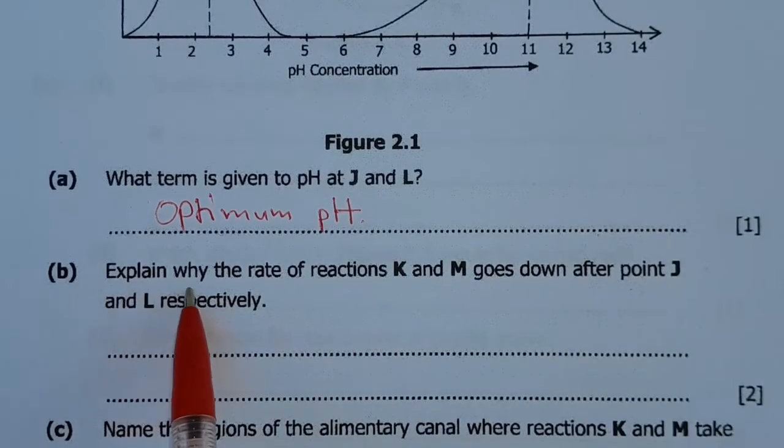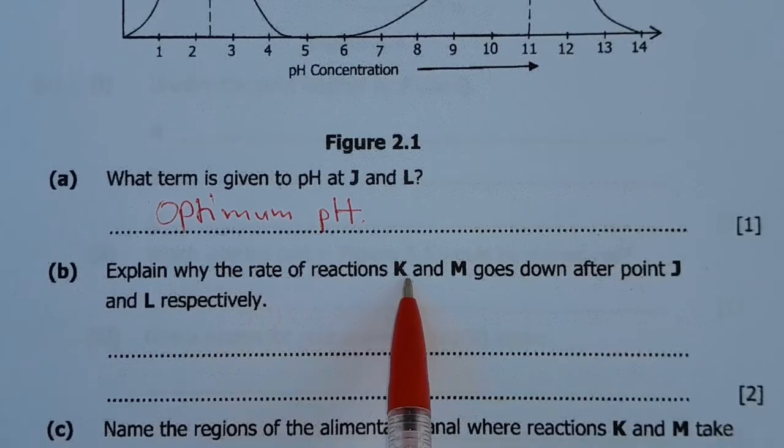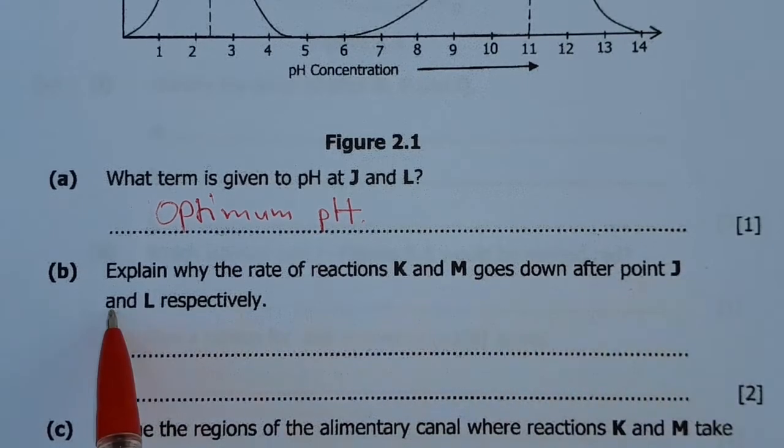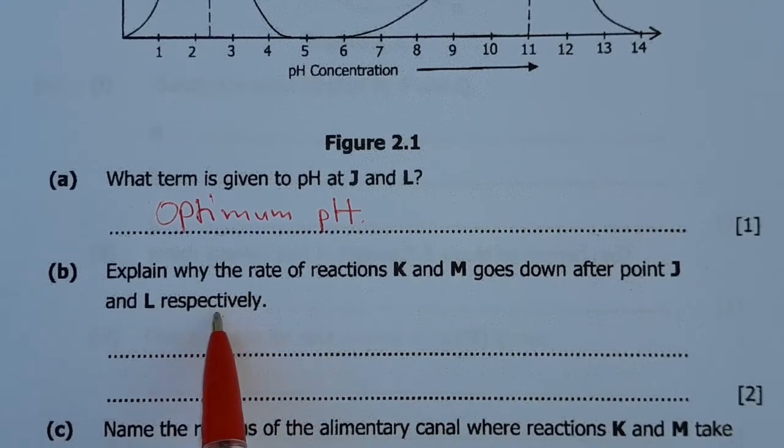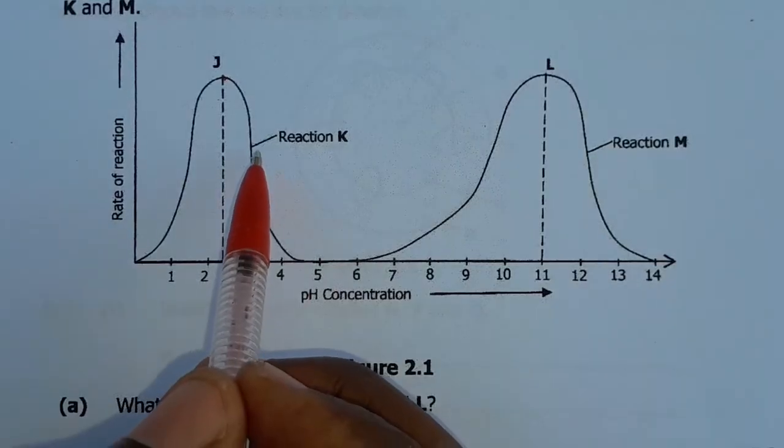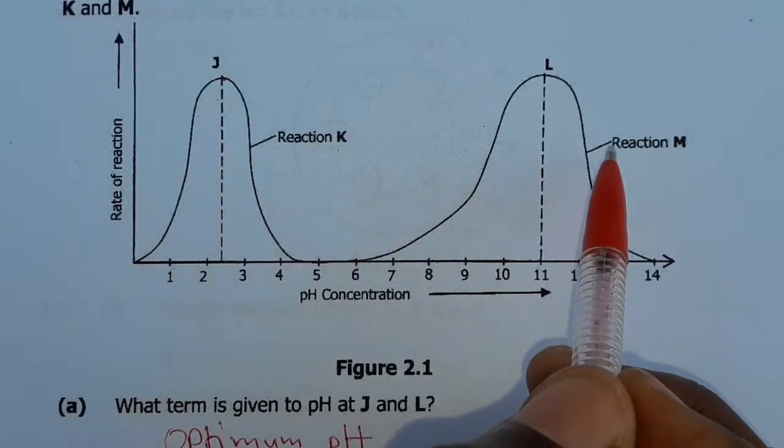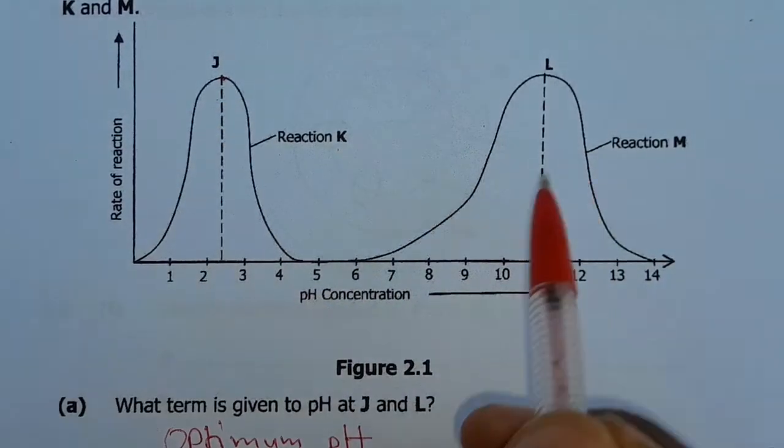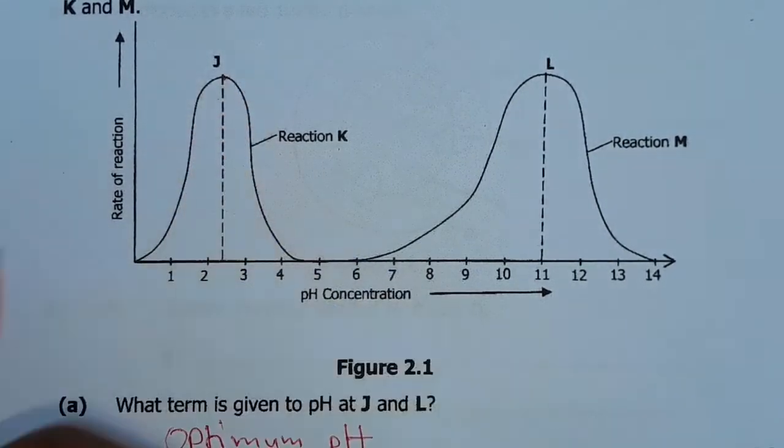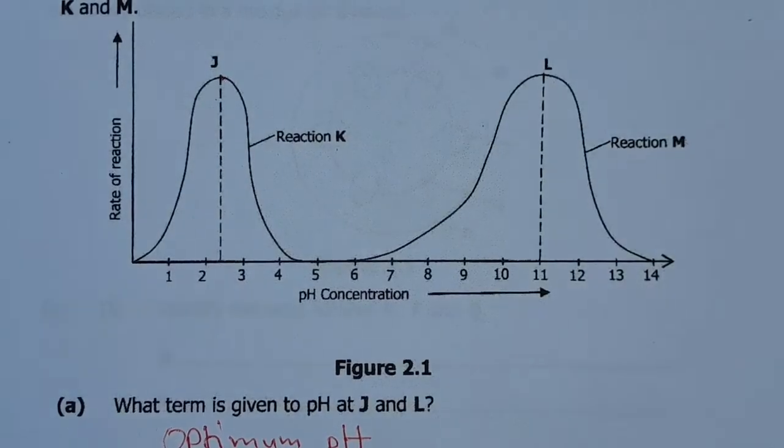Then B says, explain why the rate of reaction K and M goes down after point J and L respectively. So you can see that after point J and L, the rate of reaction K and the rate of reaction M went down. Now, the question is, why did this happen? That's what they're asking us.